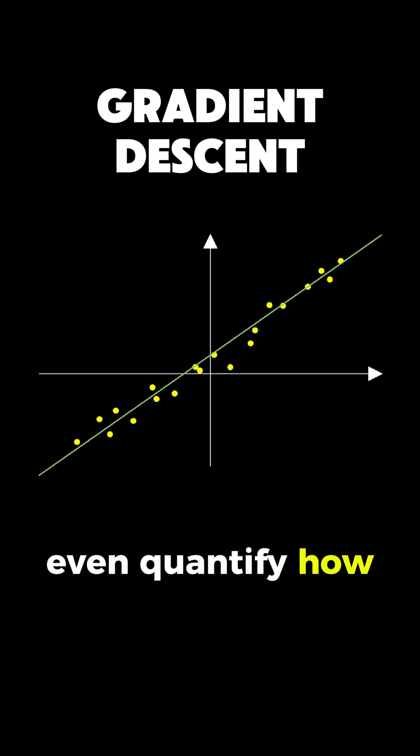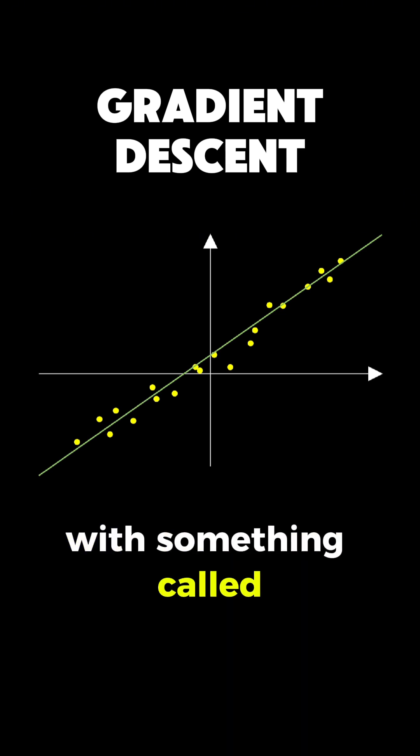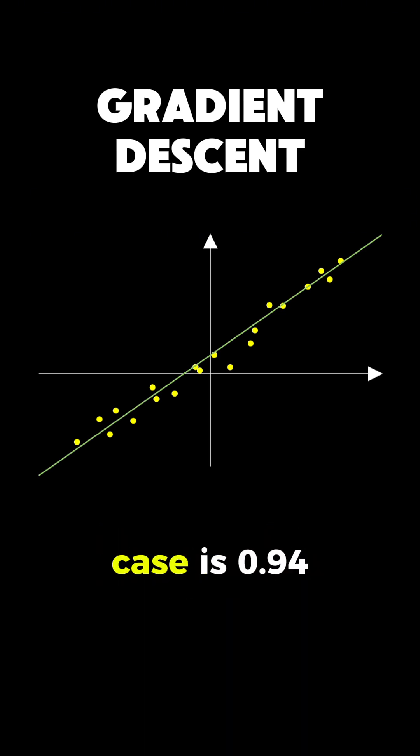We can even quantify how good the fit is with something called R-squared, which in this case is 0.94, meaning our line explains 94% of the variation in the data. So let's take a look.